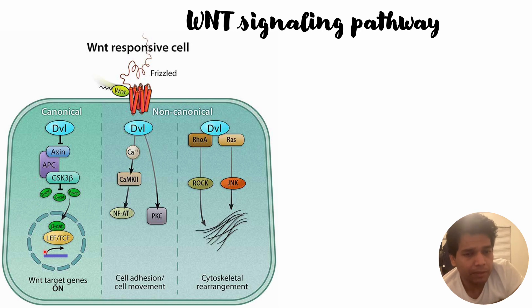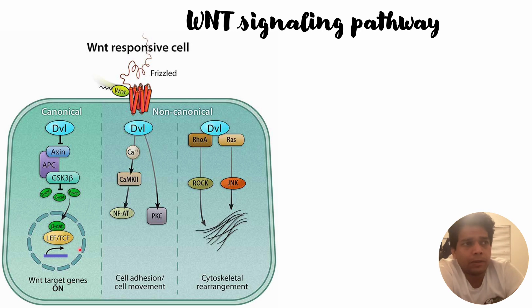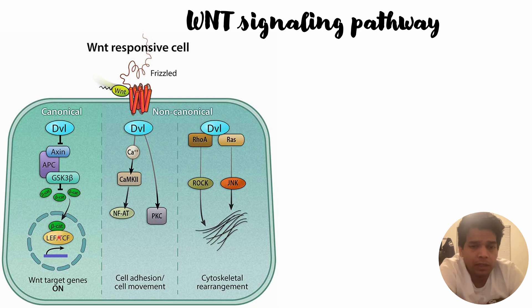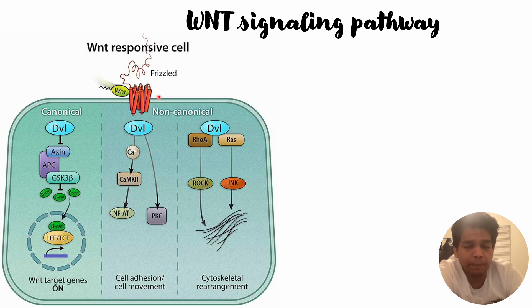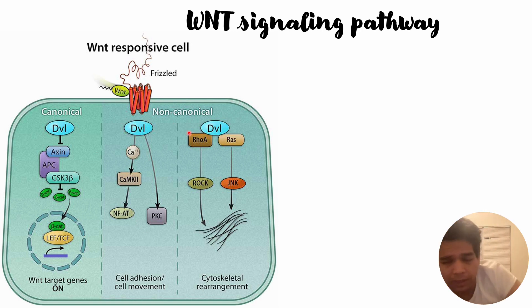If an excess amount of beta-catenin is produced, it will go inside the nucleus and upregulate genes — specifically oncogenes. This aberrant production of beta-catenin might cause upregulation of these oncogenes and trigger cancerous properties. This disruption or mutation in the WNT pathway is critical, and sometimes it could be fatal to patients.